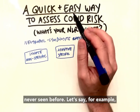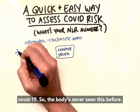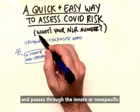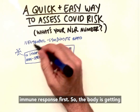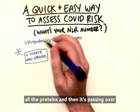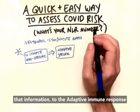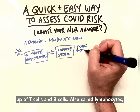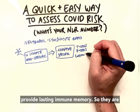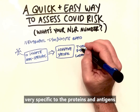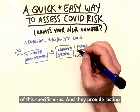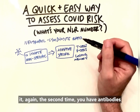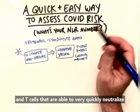When your body encounters something like a virus it's never seen before — say COVID-19 — it initially passes through mucous membranes and through the innate immune response first. The body gets a taste for what the virus is, samples its proteins, and passes that information to the adaptive immune response. The adaptive immune response, made up of T cells and B cells — also called lymphocytes — provides lasting immune memory, specific to the proteins and antigens of that virus.